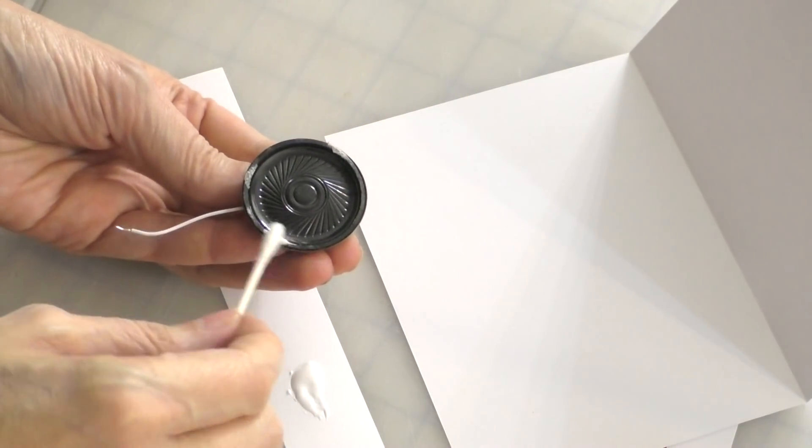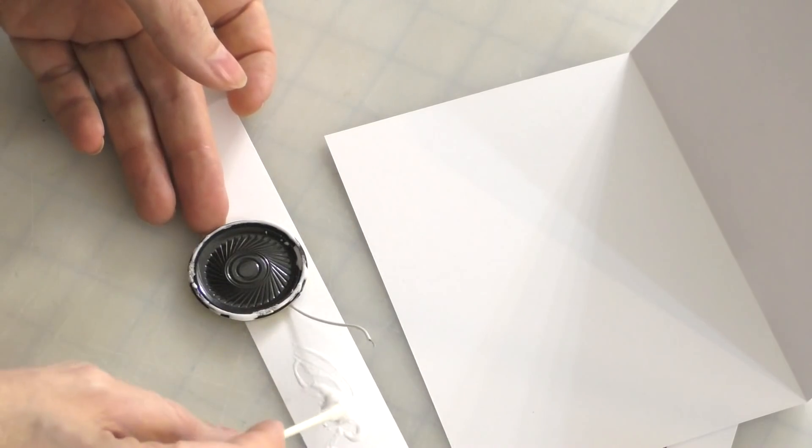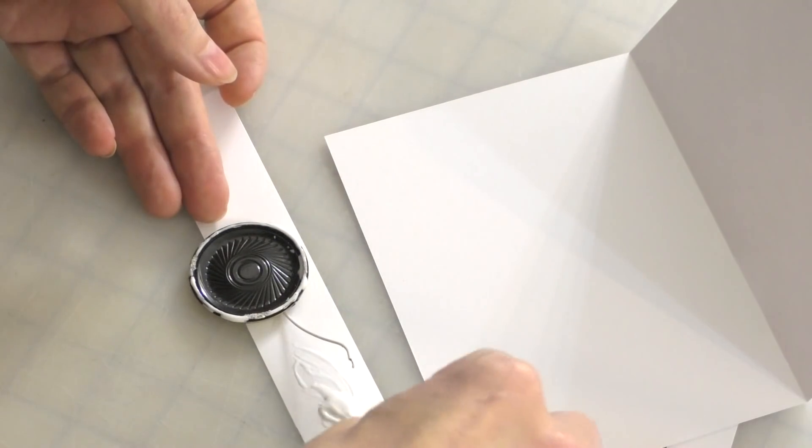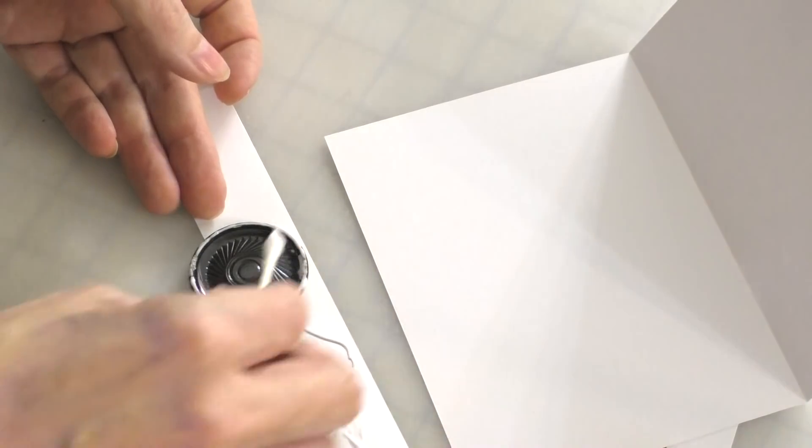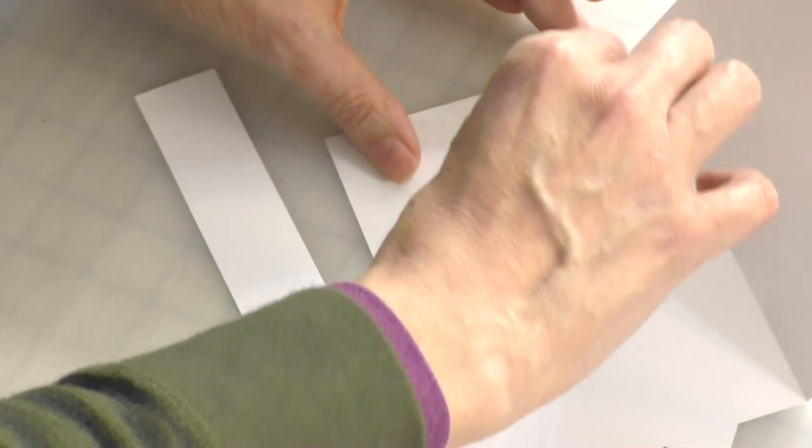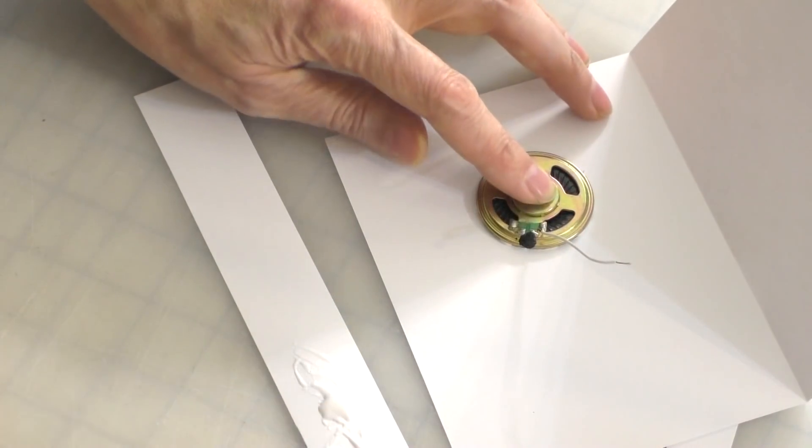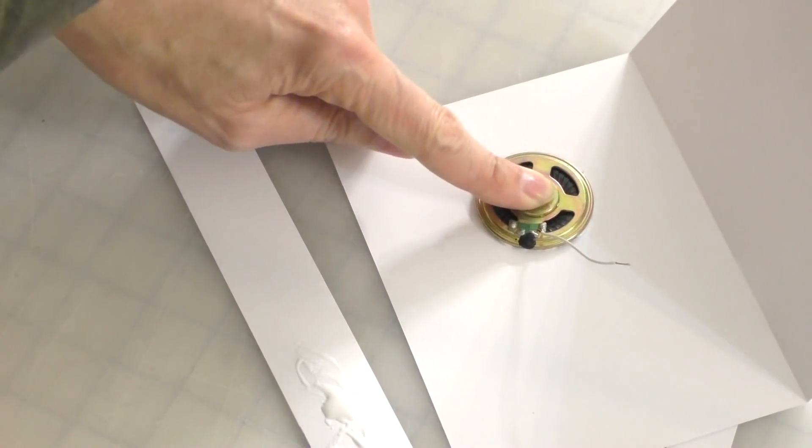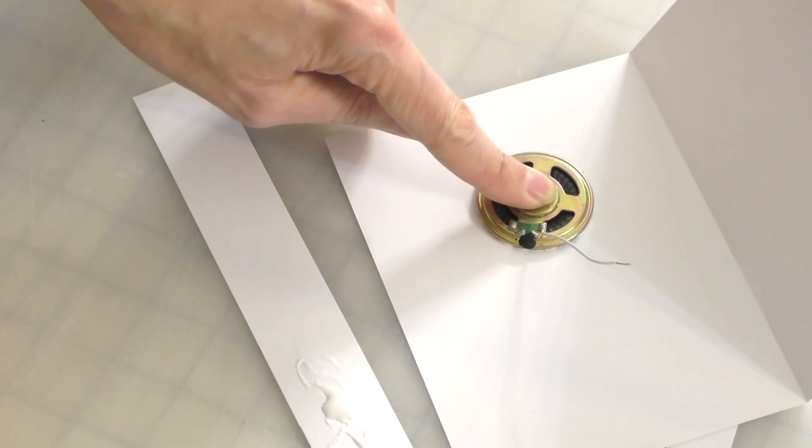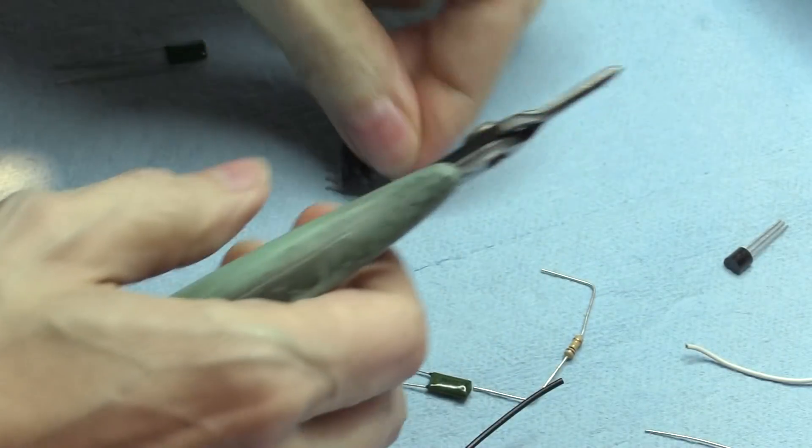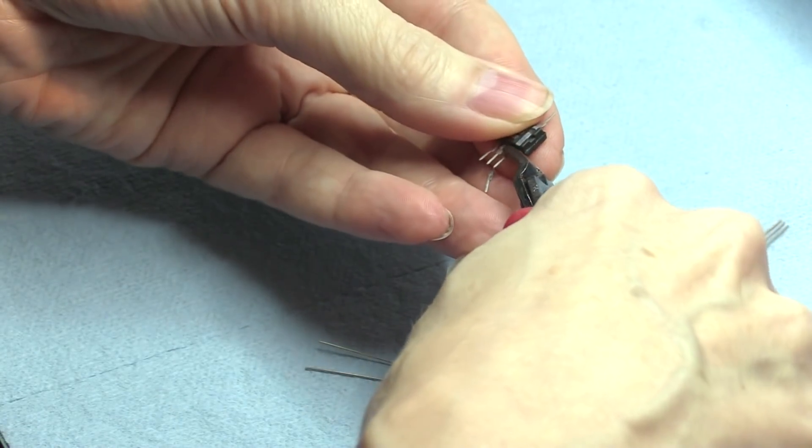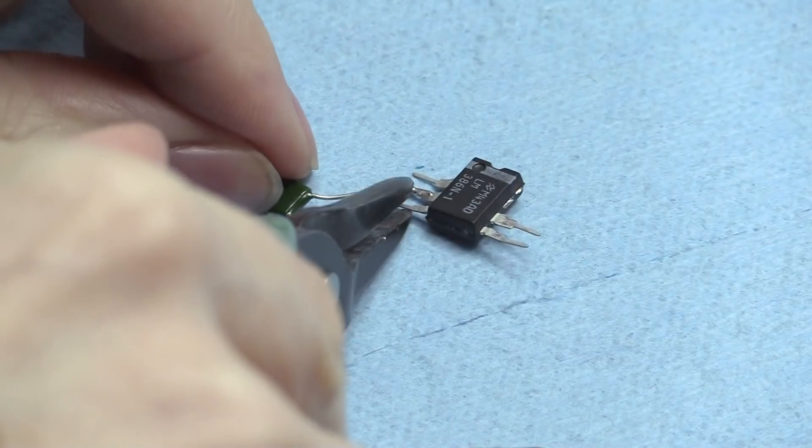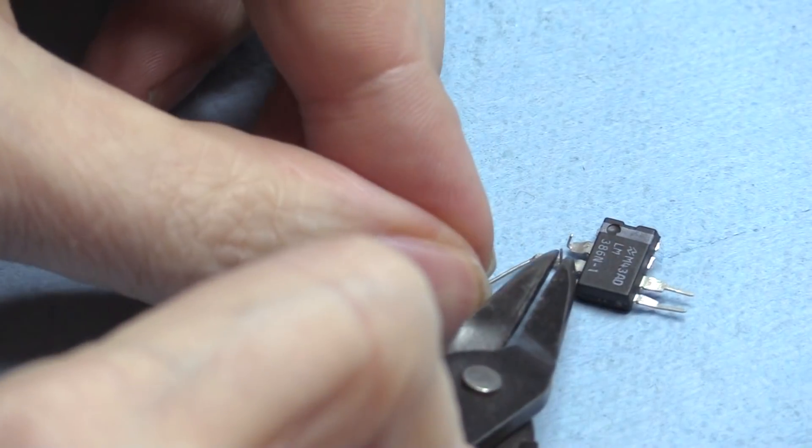I started by taking one of these little 8-ohm dynamic speakers for greeting cards - I've got tons in stock, I use them for the Sputnik project. I just put some glue on the perimeter and glued it down to the face of the card. So I'm actually using the card itself as the cone, sort of the driver for the speaker. It's a lot louder, almost an order of magnitude louder, attached to the card than just the speaker on its own. It's pretty amazing. Gluing the speaker to the card was a critical part of it.